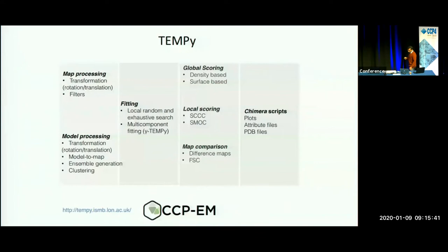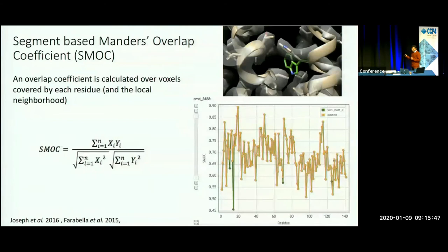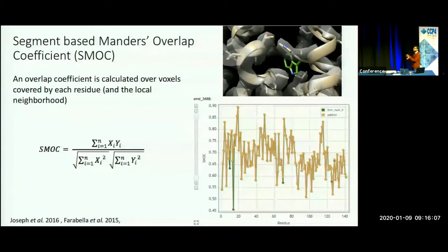One method in Tempi calculates the local fitness score of a model — it's the SMOCK score, which is the Segment-based Manders Overlap Coefficient. It's basically an overlap coefficient which tells you how good the fit of a model locally along the sequence. Here is a plot of the score along the sequence. I've manually introduced an error in the side chain fit — an obvious case of a tryptophan misfitted in the density. You can identify such misfits with local assessment methods like this.